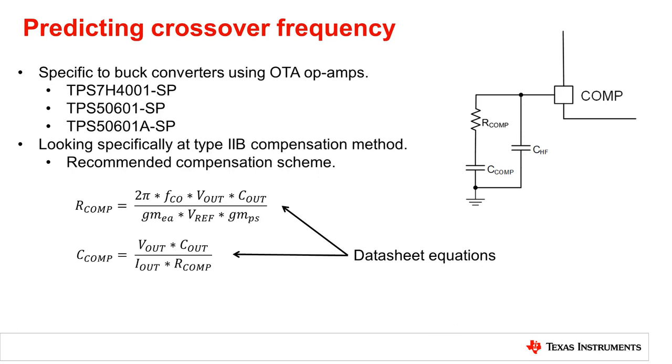The capacitor is placed in order to get a zero at one of the low frequency poles in order to cancel it out and allow the phase to increase to meet the phase margin needs at the crossover frequency.